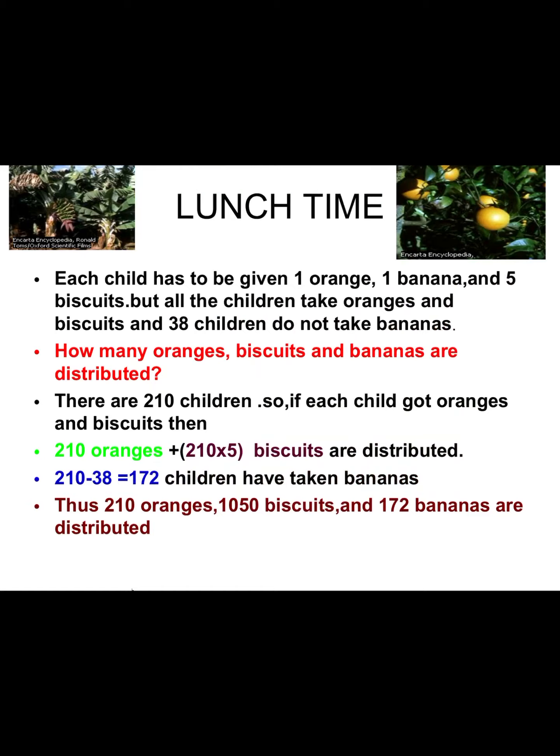You are wrong — it's 210 into 5 for the biscuits, because 5 biscuits are given to each child. So 5 × 210 biscuits have been distributed. And calculate how many bananas: out of 210 children, 38 children did not take bananas, so 210 minus 38 equals 172 children have taken bananas. That many biscuits and bananas have been distributed among the children.